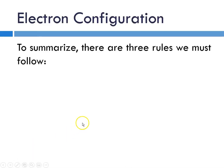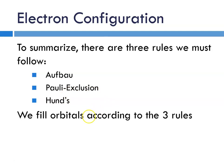To summarize, there are three rules we must follow. The first is Aufbau, which means we always start at the lowest energy filling. The second is the Pauli exclusion. You cannot put more than two electrons into an orbital. And the third is Hund's rule, which applies when filling any sublevel that has more than one orbital of equal energy. You have to put an electron in each orbital before you start pairing them up. We fill orbitals according to these three rules.